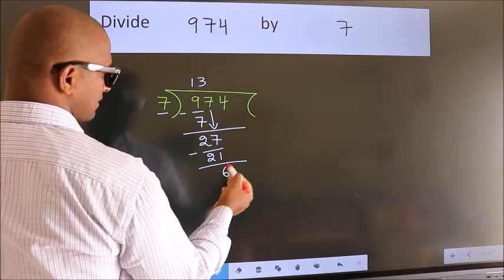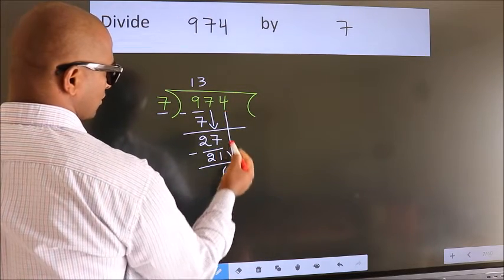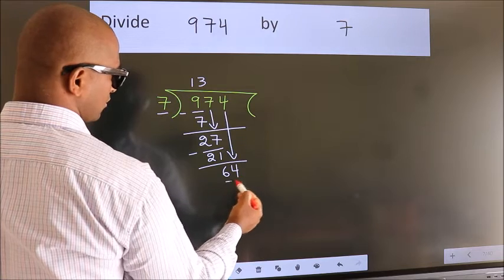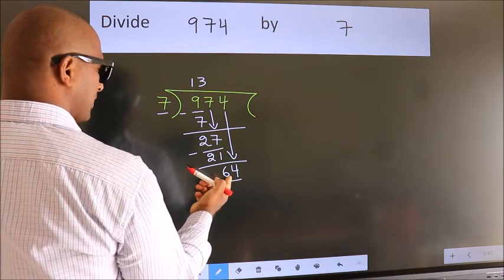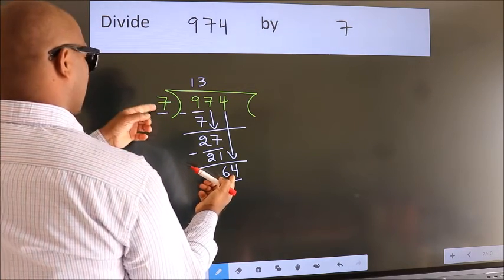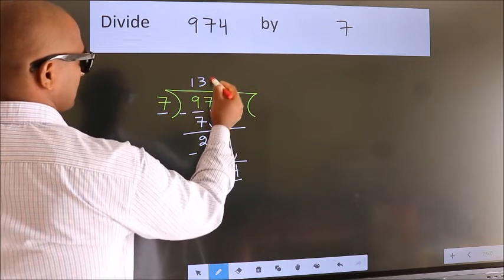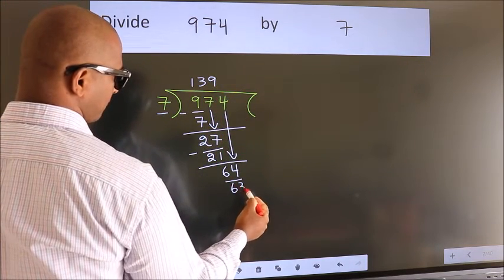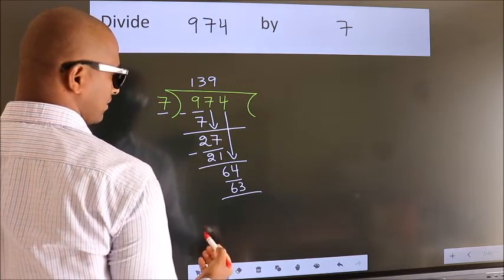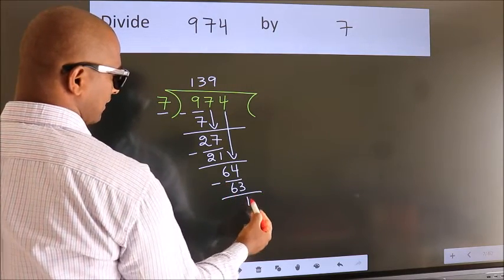After this, bring down the beside number. So, 4 down. So, 64. A number close to 64 in 7 table is 7 nines, 63. Now, we subtract. We get 1.